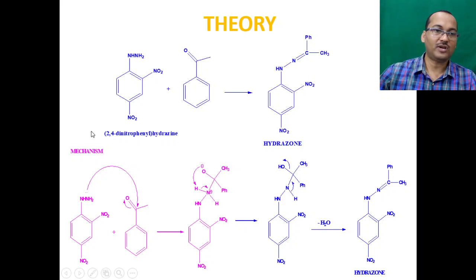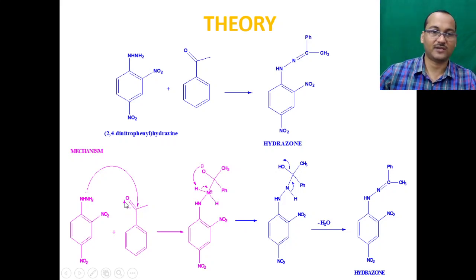Looking at the mechanism, the nitrogen lone pair on the amino group of 2,4-dinitrophenylhydrazine acts as a nucleophile. It reacts with the carbonyl carbon, and the carbonyl carbon double bond breaks on oxygen. When O⁻ takes a proton, the bond breaks on nitrogen, giving rise to a hydroxyl derivative.